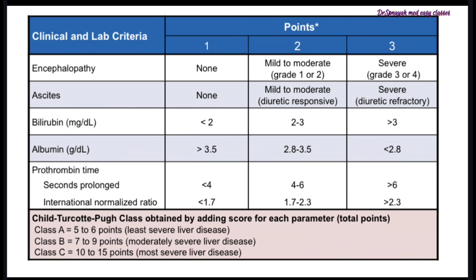For ascites: if not present, score is 1. If mild to moderate with diuretic response, score is 2. If severe and diuretic-refractory, score is 3. For bilirubin: if less than 2, score is 1. If between 2 to 3.5, score is 2. If more than 3, score is 3.